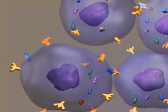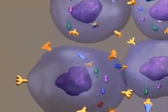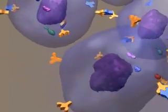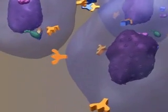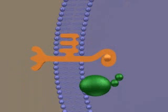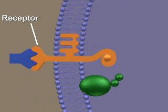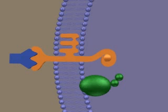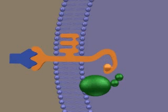A molecular signal sent by one cell is processed and converted into a response by a series of steps known as signal transduction. Signaling molecules bind to specific receptors within the membrane. The signaling molecule bound to the receptor causes the release of a second messenger molecule into the cytoplasm. The signal is relayed through a series of molecules by chemical or conformational changes.